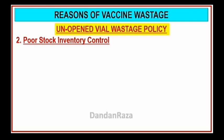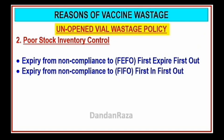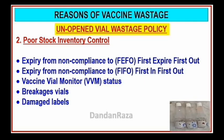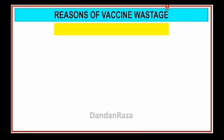Poor stock inventory control causes expiry from non-compliance. FEFO — First Expiry First Out — and FIFO — First In First Out — should be followed. Additional causes include vaccine vial monitor VVM status, breakage, damaged labels, missing labels, and missing inventories from non-compliance.